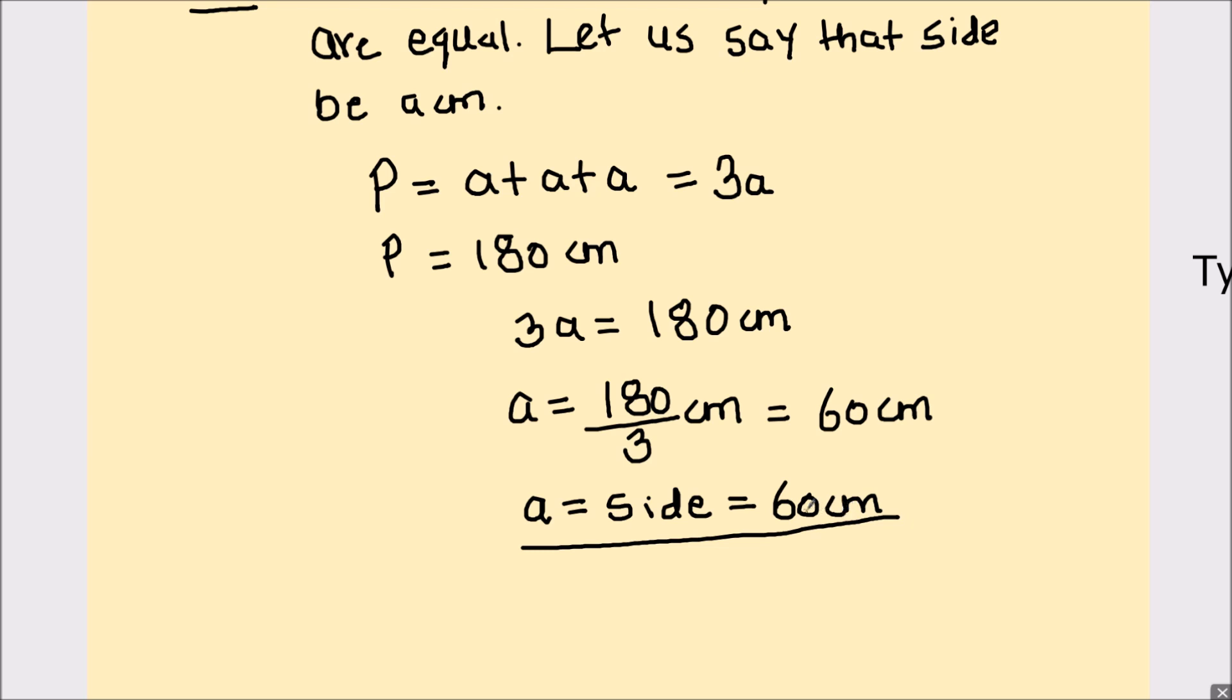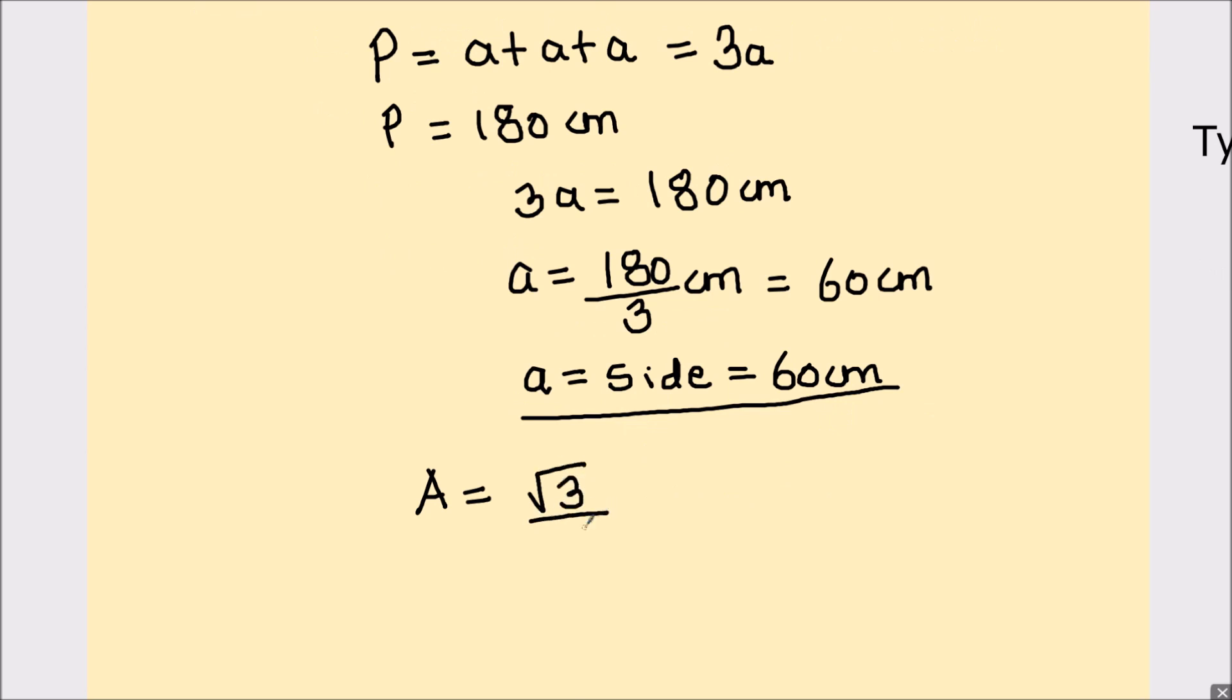Now using this side length we can find the area of the triangle. The area of the equilateral triangle is root 3 by 4 a squared where a is the side of the triangle.